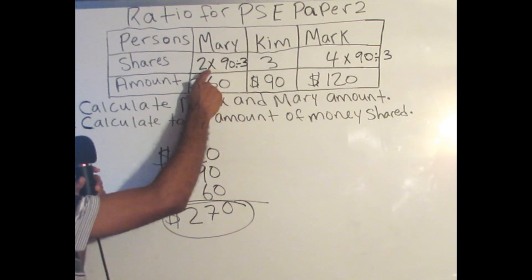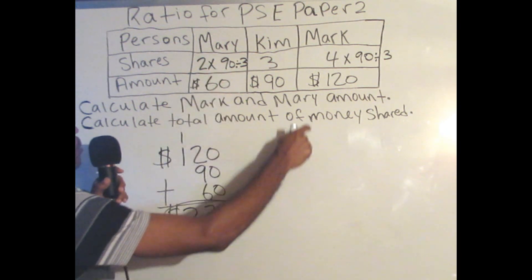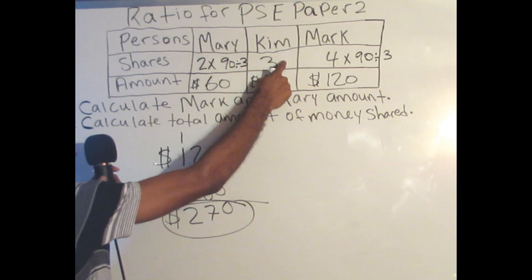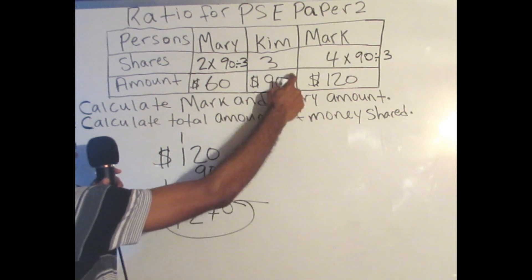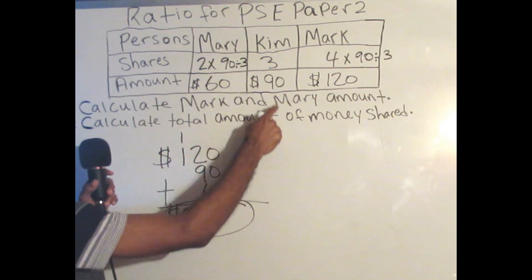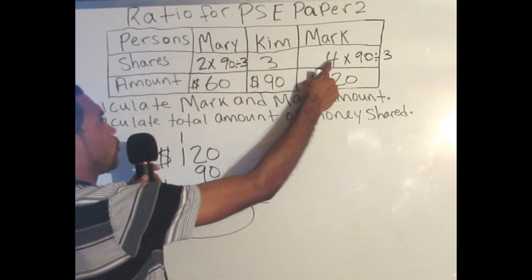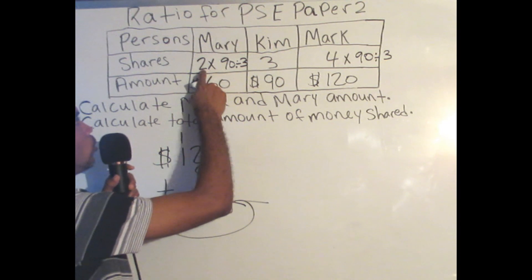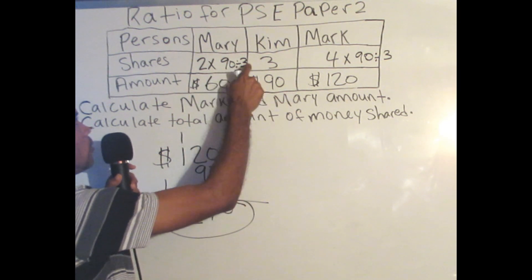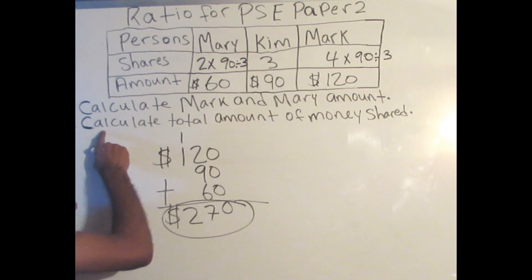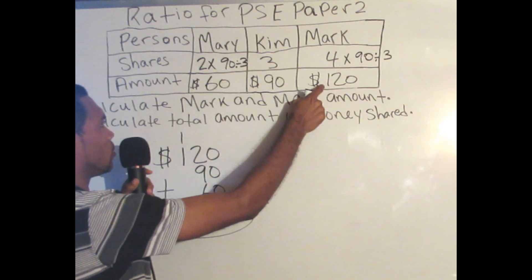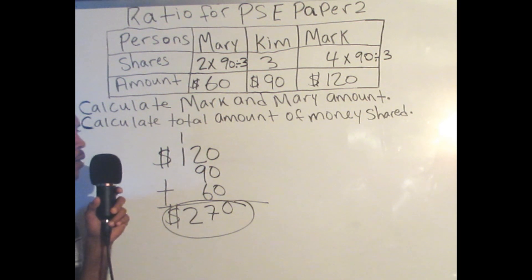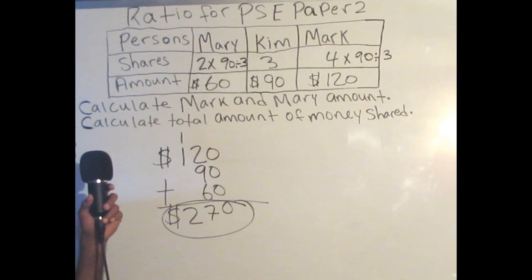A quick review: when we started the problem, we knew Mary was a ratio of 2 and Mark was a ratio of 4, but we didn't know their amounts. The problem gave us Kim's amount as $90 with a ratio of 3. For PEC Paper 2, they will always give you the amount of one of the ratios so you can find what you don't know. We multiplied 4 times 90 divided by 3 to get $120 for Mark, and 2 times 90 divided by 3 to get $60 for Mary. Then for question B, 120 plus 90 plus 60 gives a total of $270. Remember, you can subscribe for more videos coming up soon. Thank you for viewing.